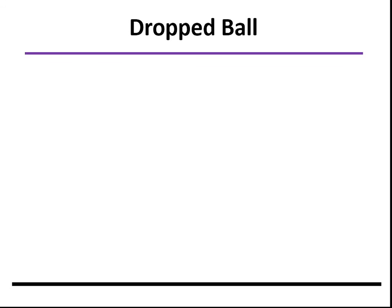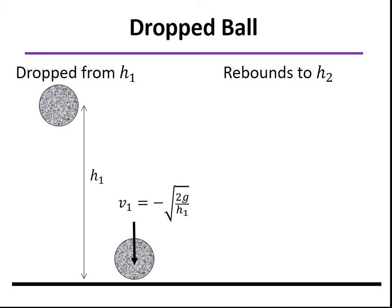Now if we go one step further: what if we drop a ball from a height H1 and it rebounds to a height H2? When we drop it from H1, right before it hits the floor, we know from conservation of energy that the velocity is the square root of 2g times h1, and that would be in the negative direction if we call positive upwards.